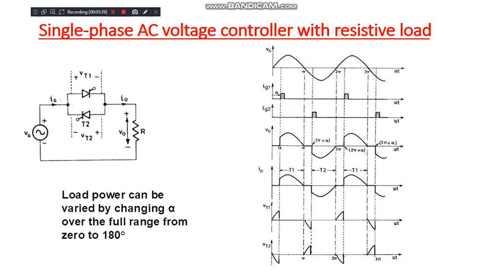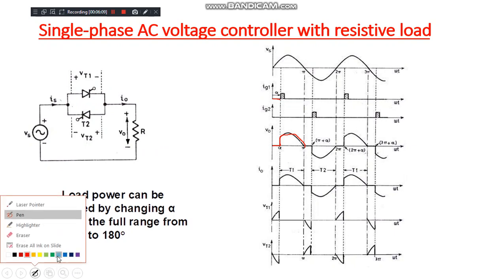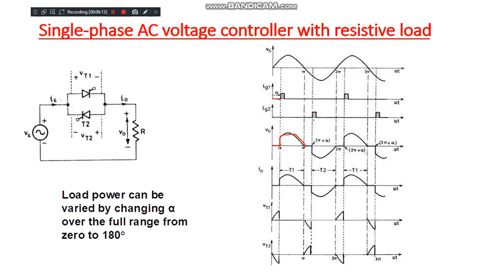Observing the waveforms: the supply voltage is a pure sinusoidal voltage. The gate signal IG1 is for thyristor T1 and IG2 is for thyristor T2. When we apply delay angle alpha, T1 starts conducting from alpha to pi. So T1 conducts from alpha to pi for the positive half cycle. For T2, the triggering is applied at pi plus alpha. In the duration between pi and pi plus alpha, the output voltage is zero. The negative supply is controlled by T2.